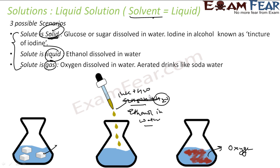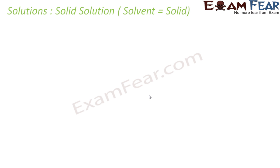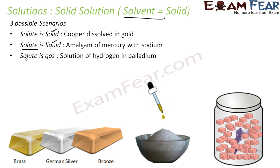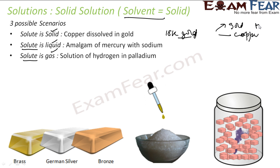We will study the factors affecting solubility in more detail in later classes. For solid solutions, the solvent is solid. Solid in solid: for example, copper dissolved in gold. In 22-carat gold, the remaining two carats are typically copper — so copper is the solute and gold is the solvent.